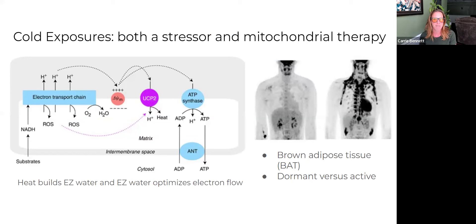Cold exposures act as a beneficial stressor. It's called a hormetic stressor. I'm not going to talk about that in this particular video, but I am going to talk about how cold optimizes the mitochondria. So when we get cold, we turn on something called our brown adipose tissue, which is tissue that is designed to keep us warm. It's full of mitochondria.